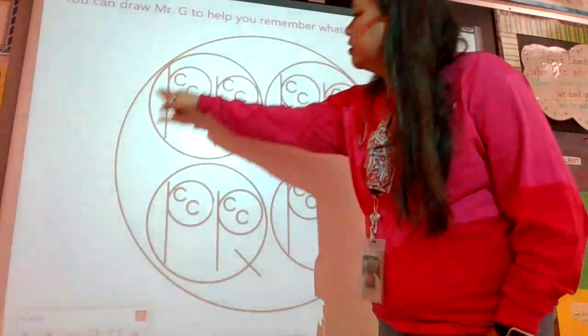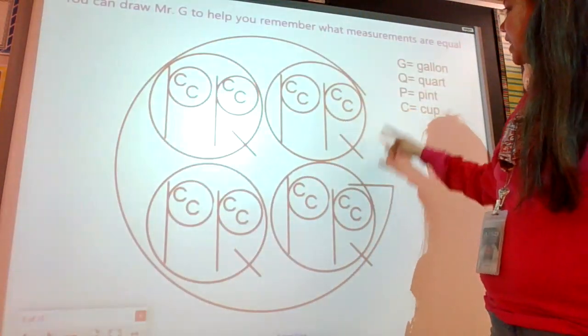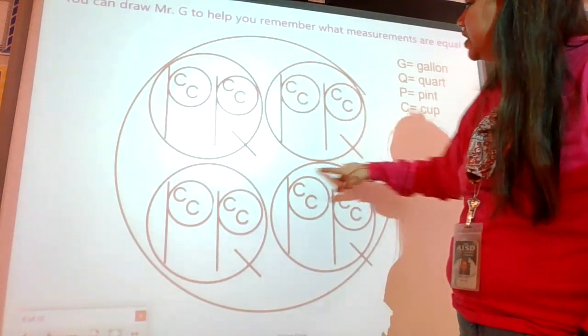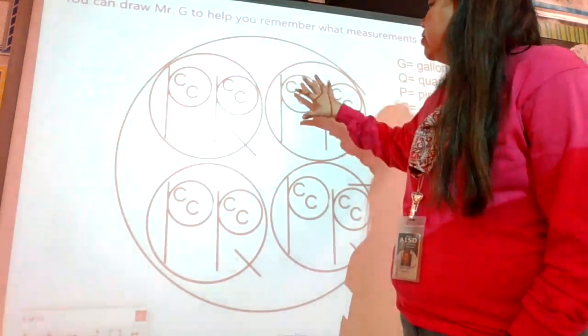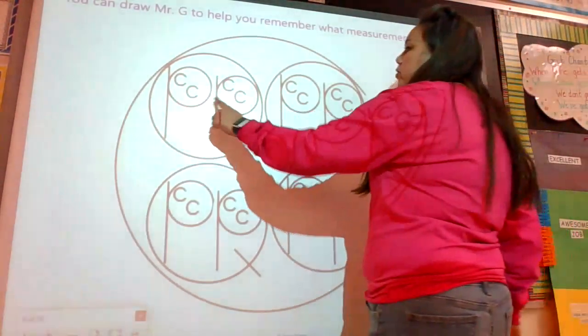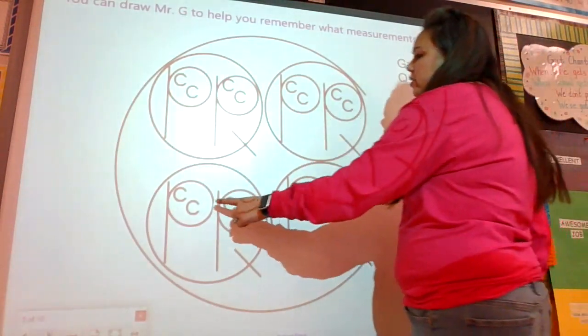G represents a gallon, Q represents a quart, P represents a pint, and C represents a cup. I know that you have talked about this in third grade because everyone comes in telling me the story. Here's the big G. Inside of the big gallon are four quarts, because there's four quarts in a gallon. Do you see the Q's? Inside the big G are those four quarts, and inside those quarts are two pints.